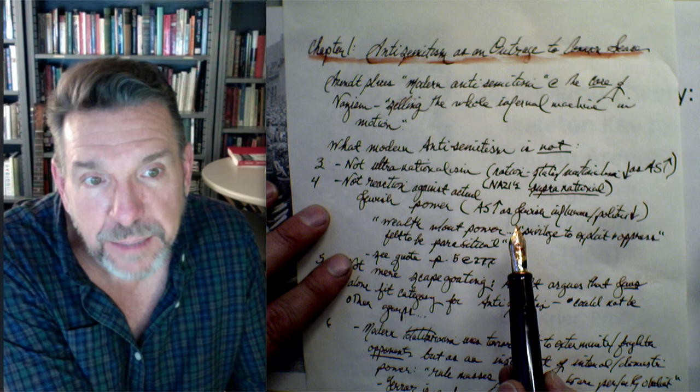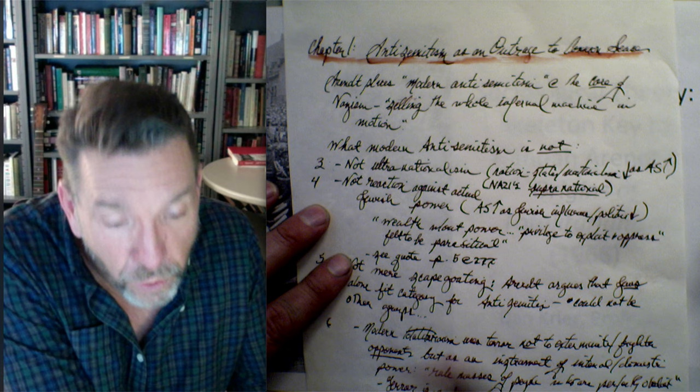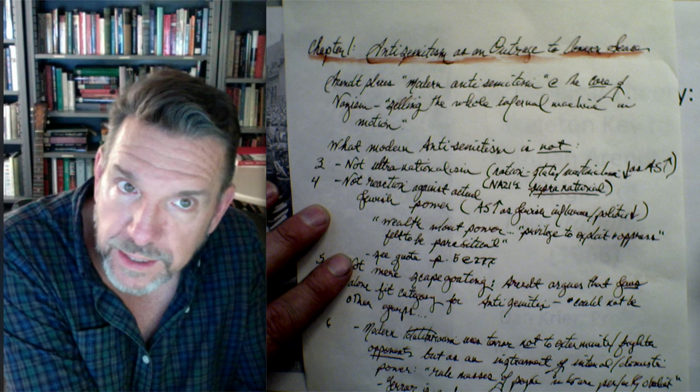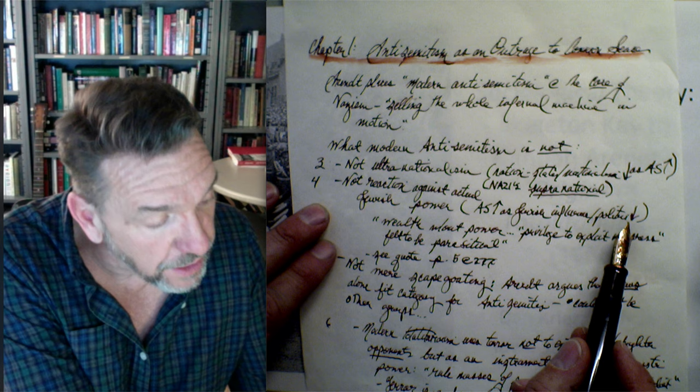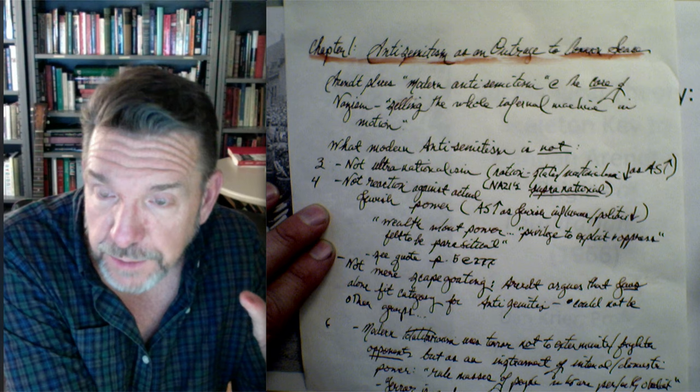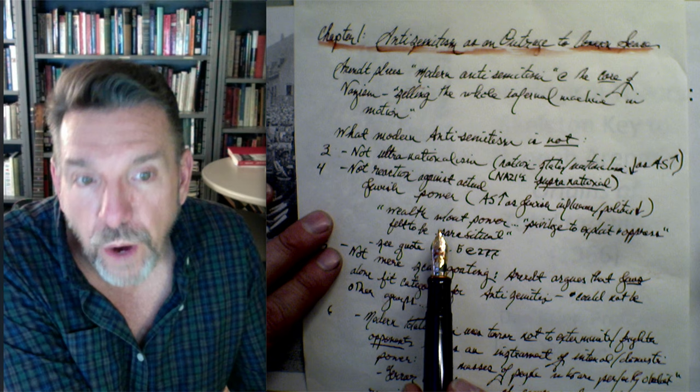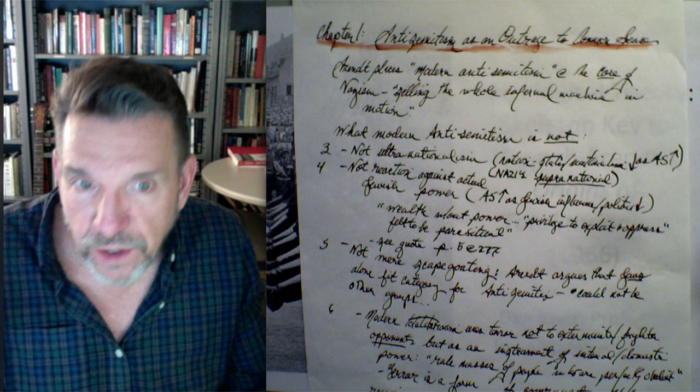Second, modern antisemitism is not a reaction against actual Jewish power. She makes the argument that antisemitism increases as Jewish influence in the state — their importance as state financiers and diplomatic mediators between nation states — declines. So as the nation state declines and the political power of Jewish people diminishes, antisemitism increases. She argues it's actually 'wealth without power' that triggers it — once the power is gone, the remaining wealth is felt to be parasitical.